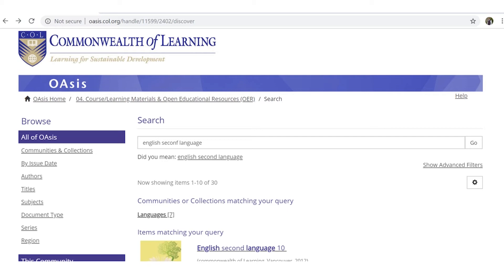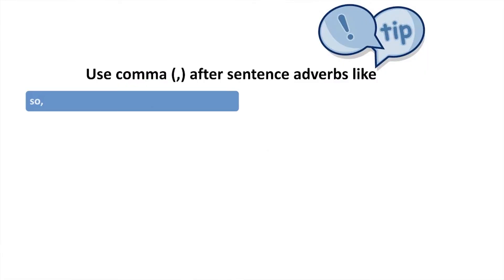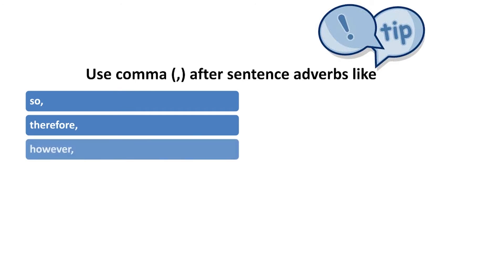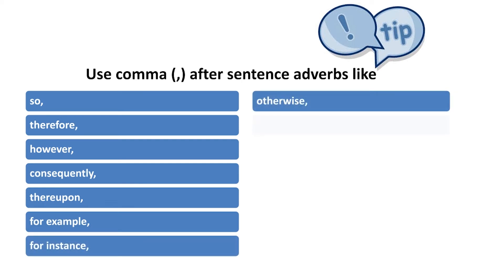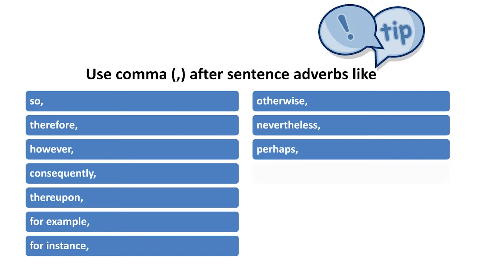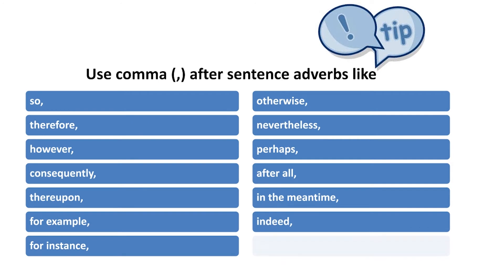What is the tip for using punctuation effectively and avoiding punctuation errors? Number one: use comma after sentence adverbs like 'so,' 'therefore,' 'however,' 'consequently,' 'thereupon,' 'for example,' 'for instance,' 'otherwise,' 'nevertheless,' 'perhaps,' 'after all,' 'in the meantime,' 'indeed,' 'moreover,' and so on. Most of the time when you are using 'therefore' or 'moreover,' don't forget putting the comma after them.